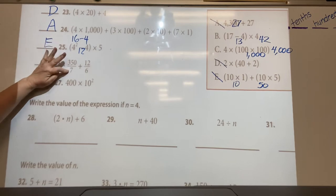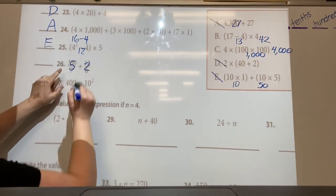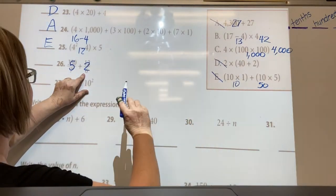You see that? Okay, three hundred. These are division problems. Three hundred fifty divided by seven is five, twelve divided by six is two, so five plus two is seven. Which one equals seven?